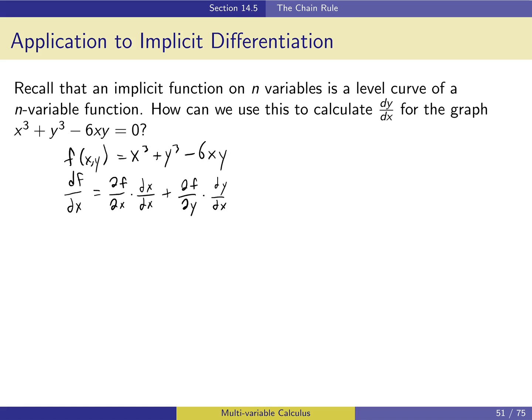We can see dy/dx right there in the expression, so if we figure out the other terms, we can solve for it. The key insight is that since the implicit assumption is that f equals 0, its derivative with respect to x is also 0 — no matter how x or y change, this function is 0. So the total derivative equals zero. We also know dx/dx is just 1.